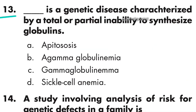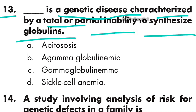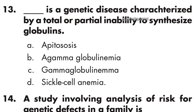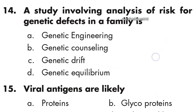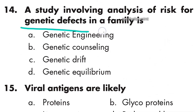Question 13: Agammaglobulinemia is a genetic disease characterized by a total or partial inability to synthesize globulin. Option B is right. Question 14: A study involving analysis of risk for a genetic defect in a family is genetic equilibrium. Option D is right.